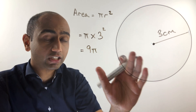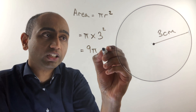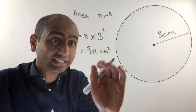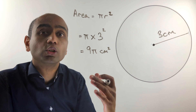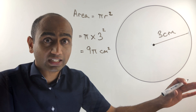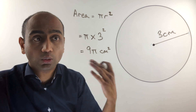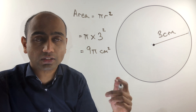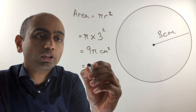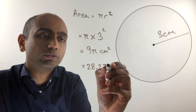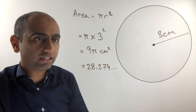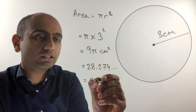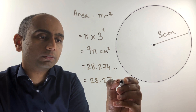Remember, we are working out an area, which is a two-dimensional measure, so we are working in centimeters squared. This is an exact answer, which is great, but perhaps not as helpful as a numerical answer, even though we'll have to round it. Using a calculator to work out 9 times pi, we get 28.274... and rounding to two decimal places gives 28.27 centimeters squared.